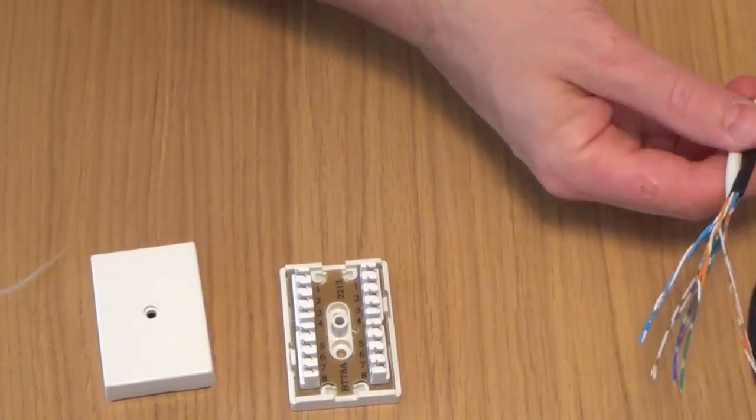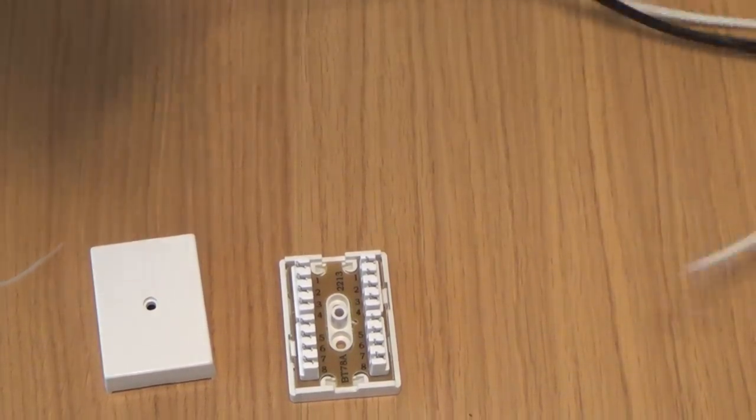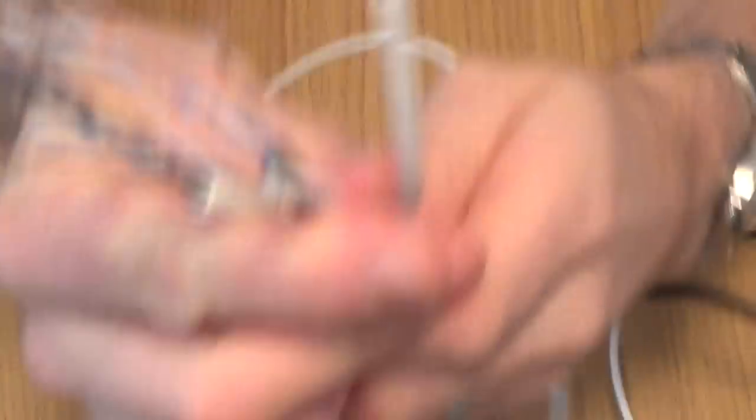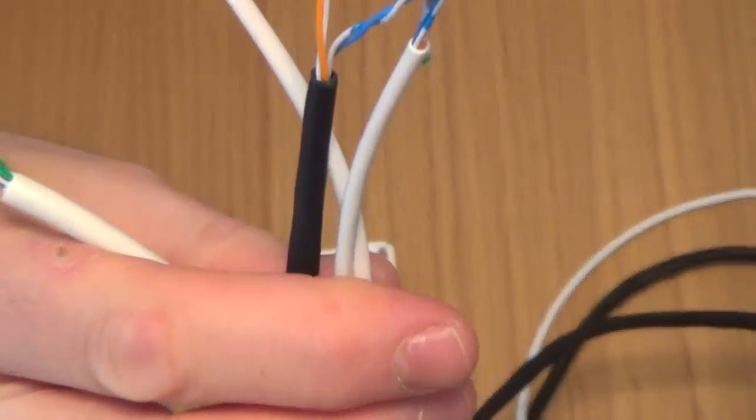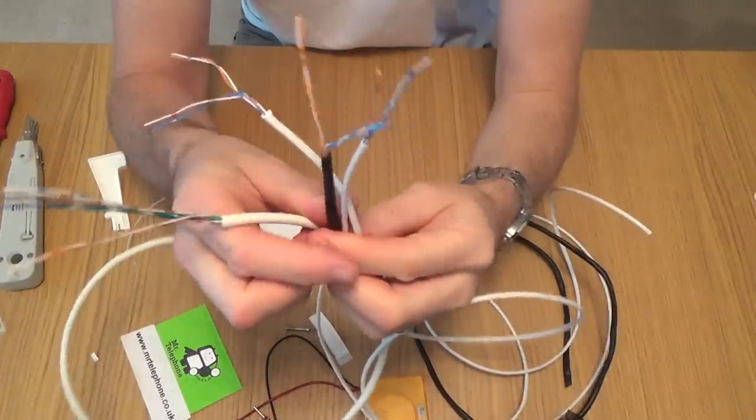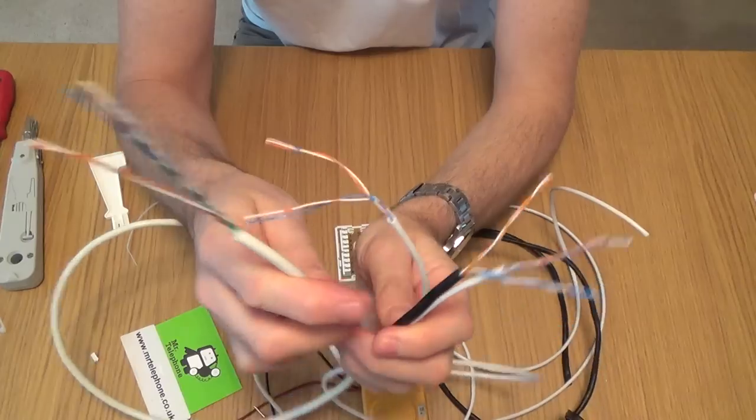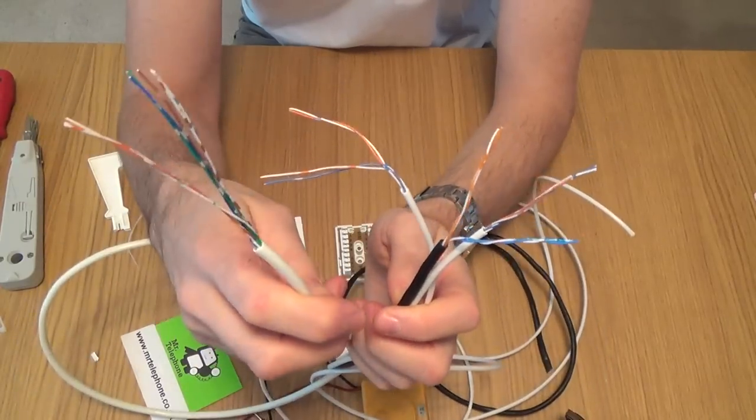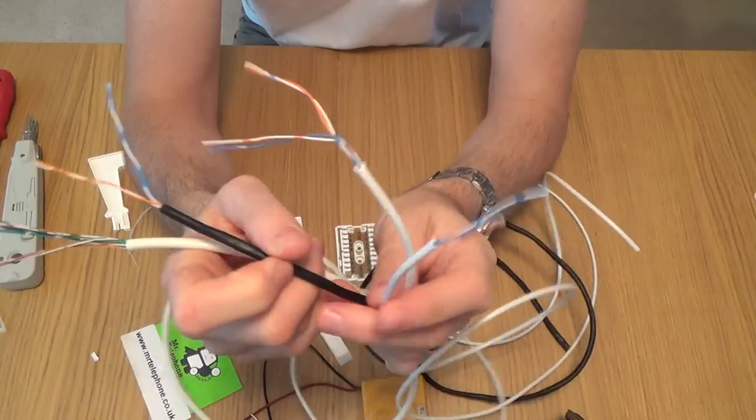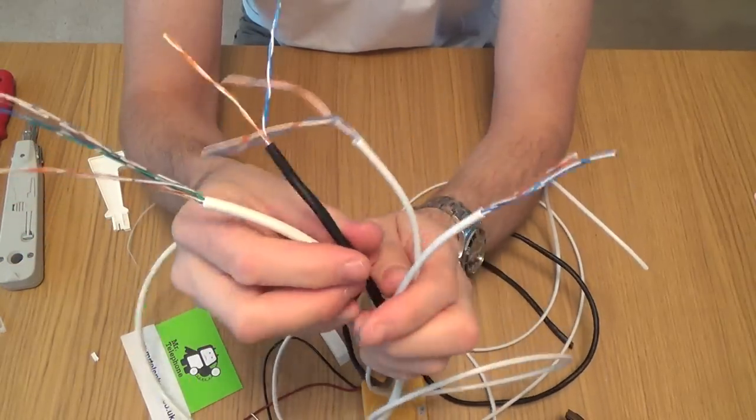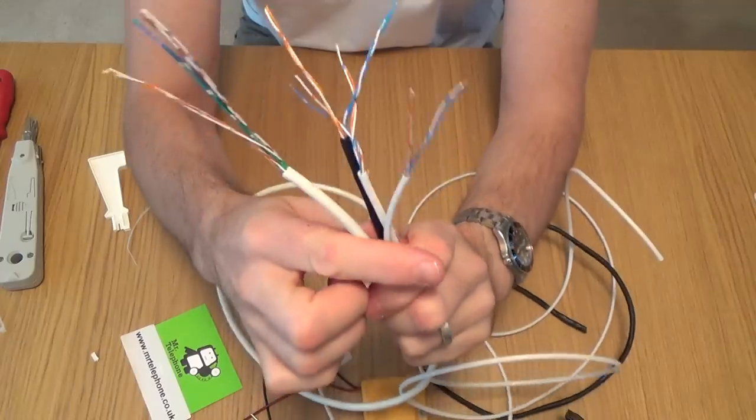So to use a bit of imagination now, we have four cables. Let's zoom out actually. Now let's pretend that this four pair one, this eight wire one here, is the main cable coming in and it's going to connect onto an external cable here and two internal cables. So this little junction box will connect all these four cables together.